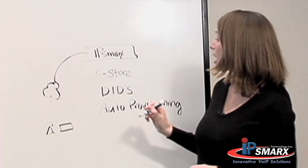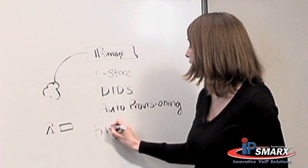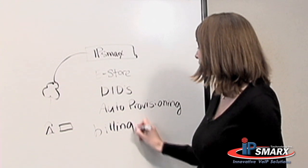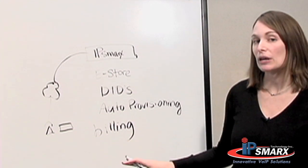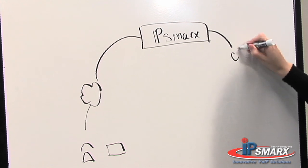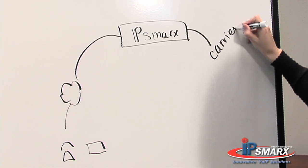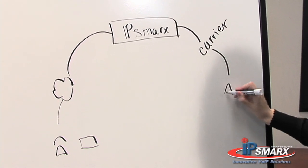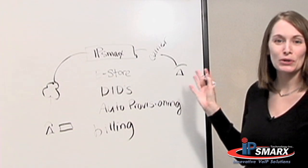From here, the softswitch is going to keep track of how many minutes your customer is using, so you can bill them appropriately, and also route the calls through the carrier of your choice to the destination, which of course could be anywhere in the world.